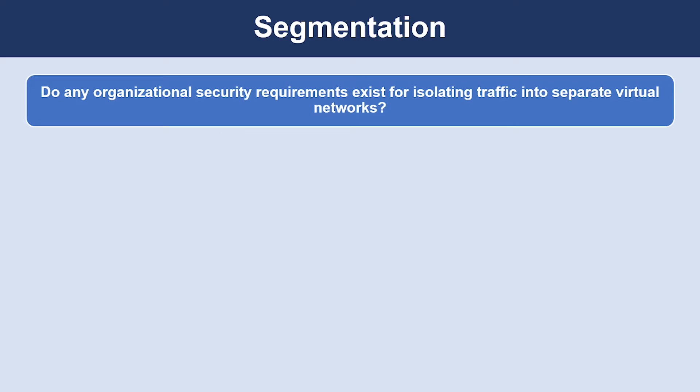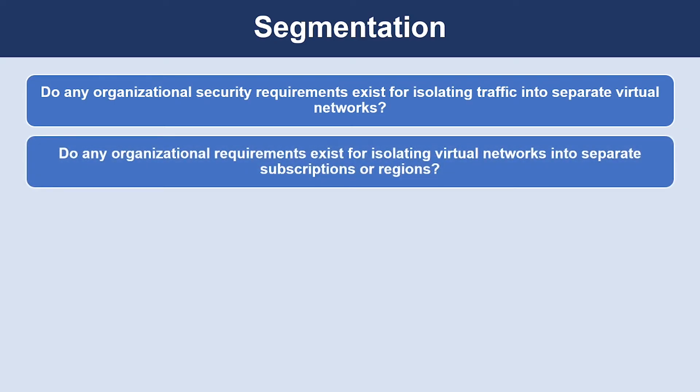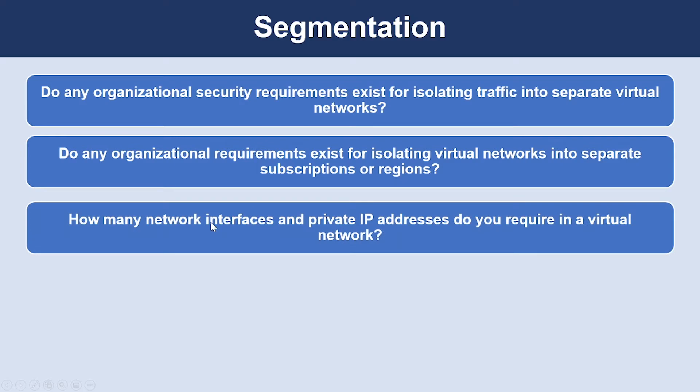If you connect virtual networks, you can implement a network virtual appliance such as a firewall to control the flow of traffic between them. Also consider whether organizational requirements exist for isolating virtual networks into separate subscriptions or regions, and how many network interfaces and private IP addresses you require — since there are limits within a virtual network.